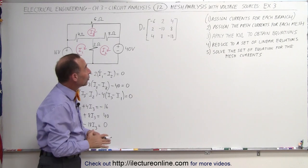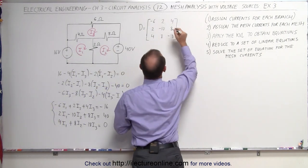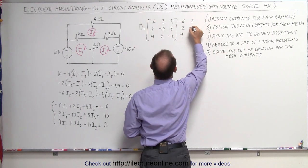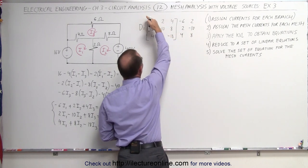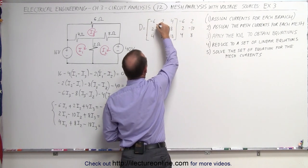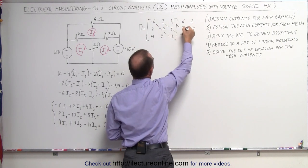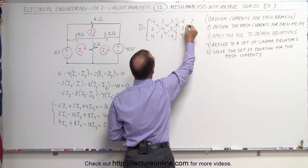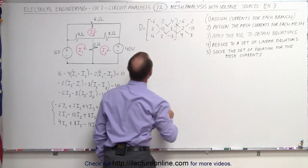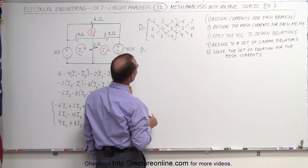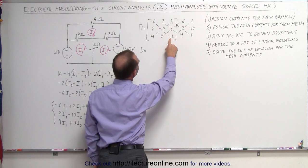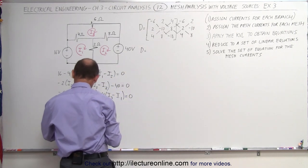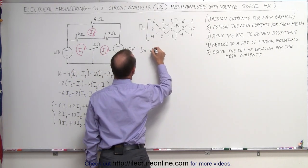To find the determinant, the easy way is to add the two columns again on the right side. So we rewrite the first two columns: minus 6, 2, and 4; then 2, minus 10, and 8. We multiply the diagonal elements in one direction and add them all up, then subtract the products of the diagonal elements in the other direction. In this direction: minus 10 times 18 times 6 — that's 1,080, and with three minus signs it's minus 1,080.